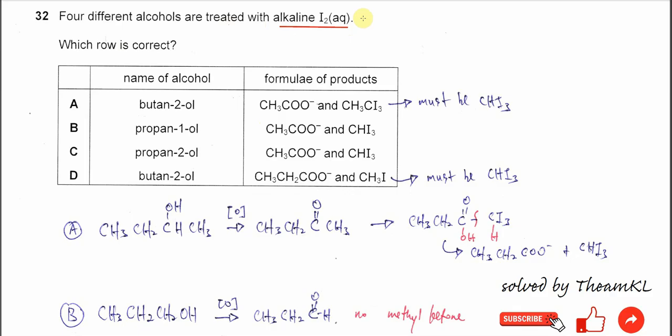So the alcohol might produce the iodoform which is CHI3, or we call triiodomethane. This is a yellow precipitate.